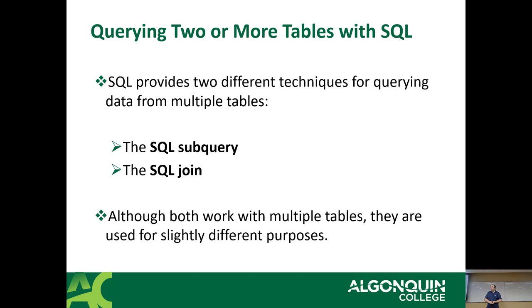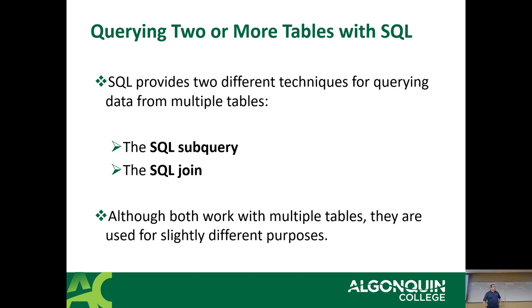From teaching this for the last 12 years, I've noticed you can almost draw a line right down the middle of the class. One half gets it right off the bat, one half suffers. I've yet to figure out what causes that divide. It's just some people's brains work one way, some other people's brains work another way. It's not just syntax - it's understanding what the implications are of how it works.